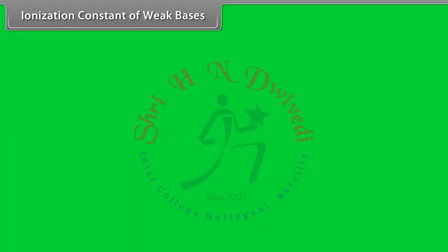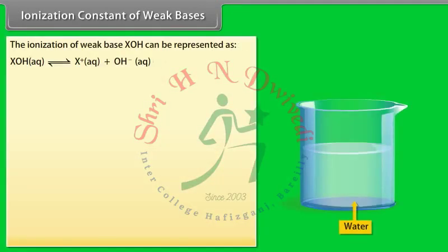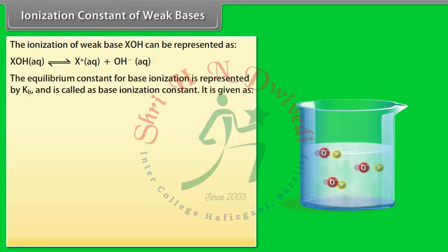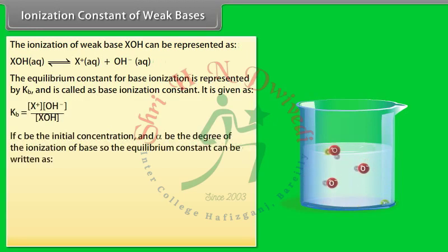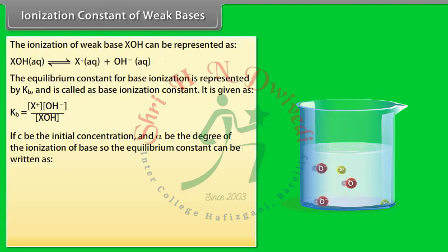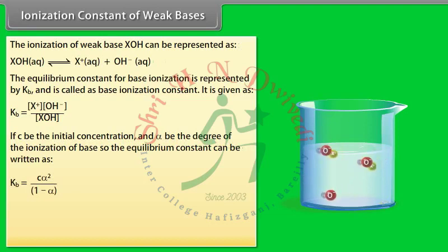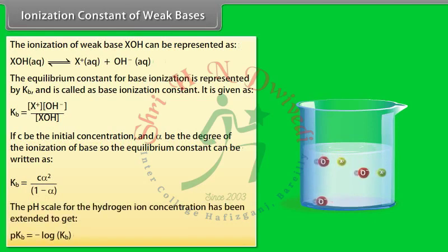The ionization of weak base XOH can be represented similarly. The equilibrium constant for base ionization is represented by Kb, called the base ionization constant. If C is the initial concentration and α is the degree of ionization, then Kb = Cα² / (1−α).